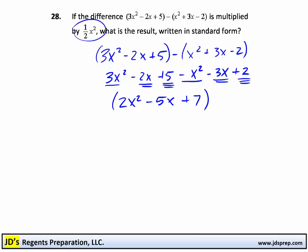Now we needed to take this answer and multiply it by the 1 half x squared that was in the problem. So outside of our parentheses, we put 1 half x squared, and we need to distribute to each term in the parentheses. So 1 half times 2x squared, or 1 half times 2, multiplying the coefficients, leaves us with 1. x squared times x squared is x to the 4th.